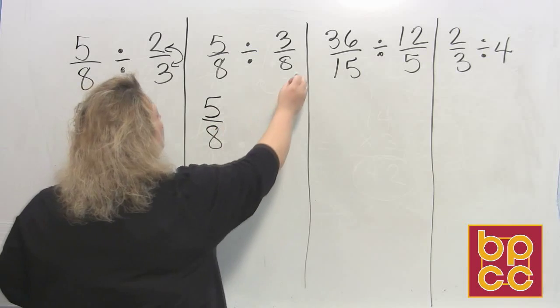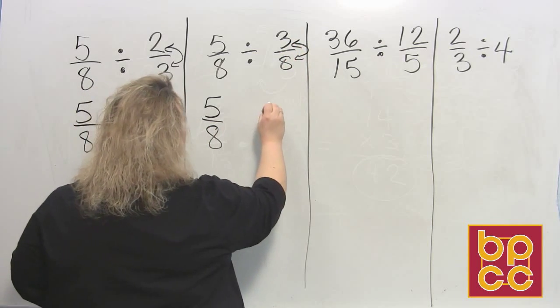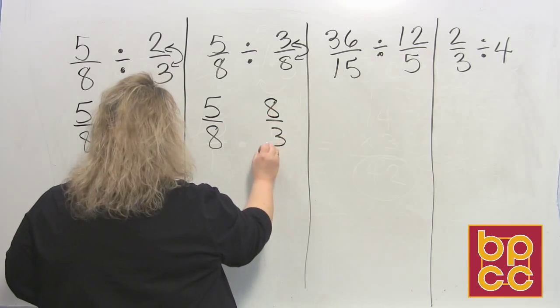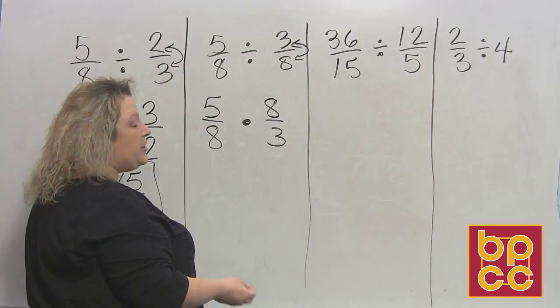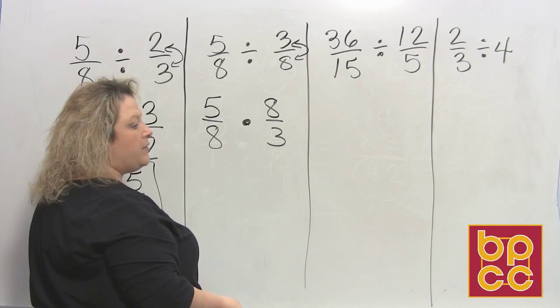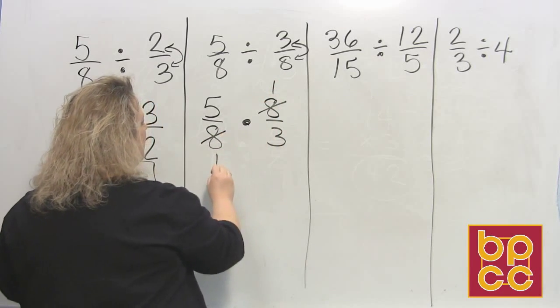Easy as pie. We're going to flip the second. The second fraction is 3 over 8. So we're going to flip it to 8 thirds and multiply. Now look at your fractions. Can you reduce anything? Yeah, I can reduce the 8s. 8 divides into 8 once. 8 divides into 8 once.